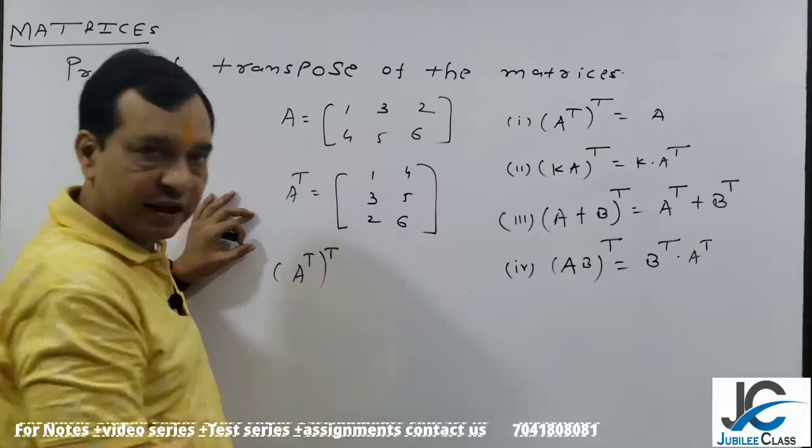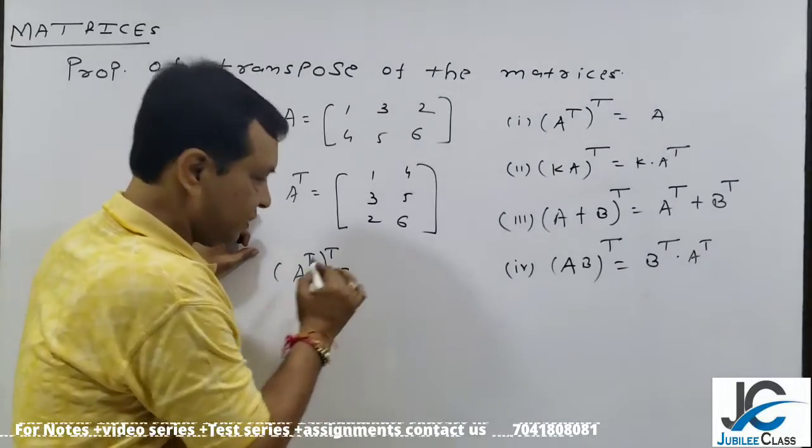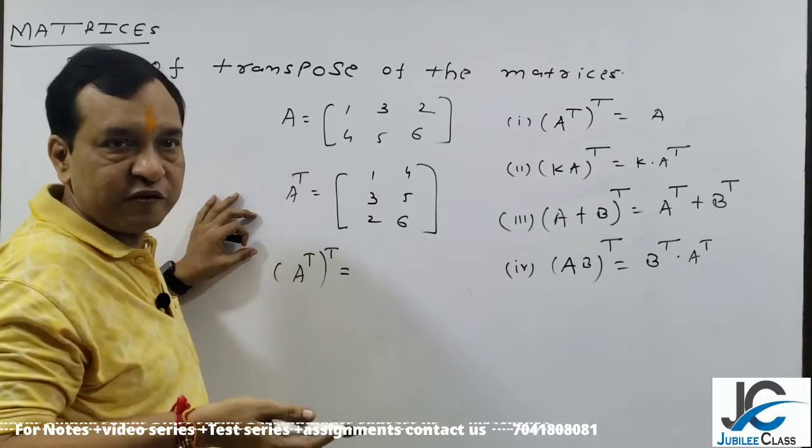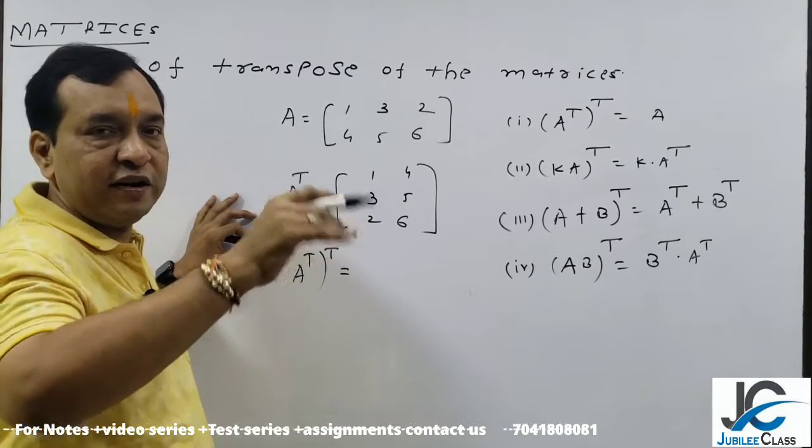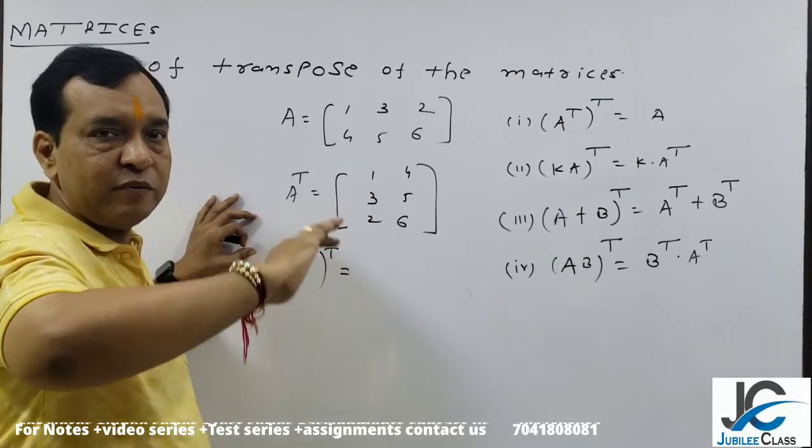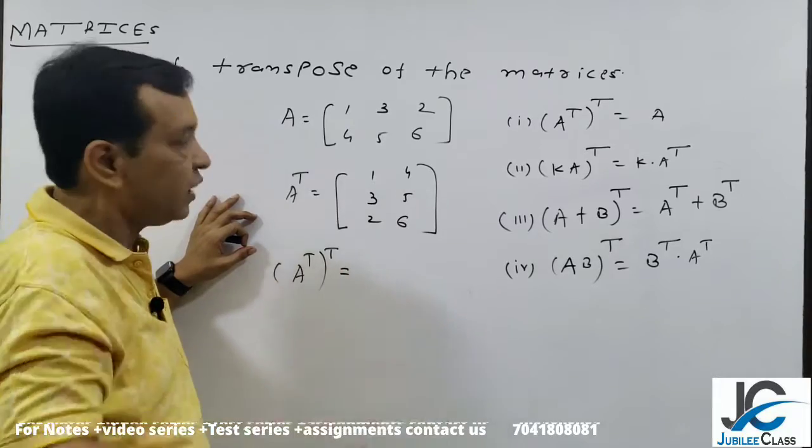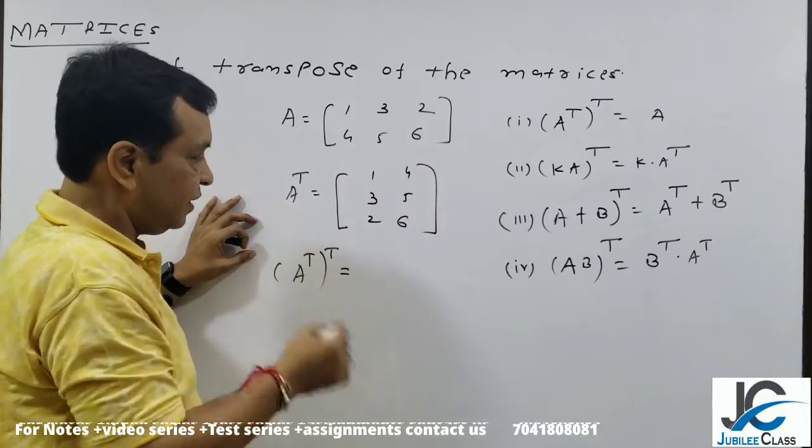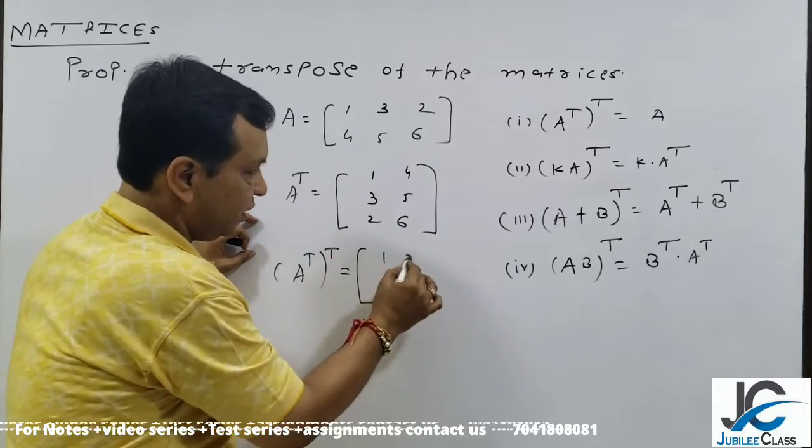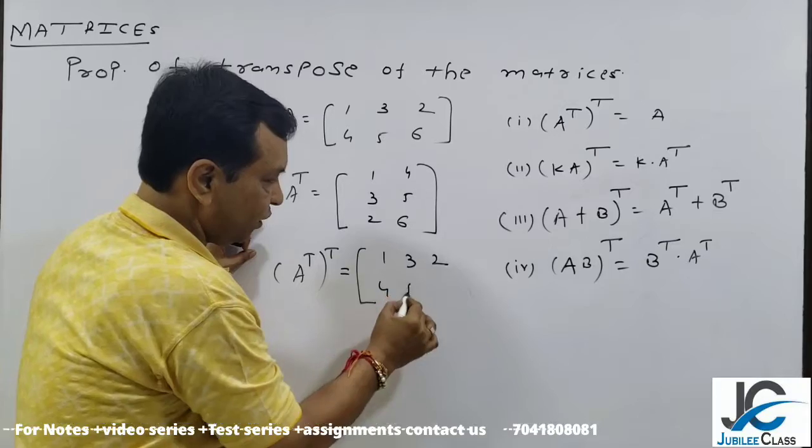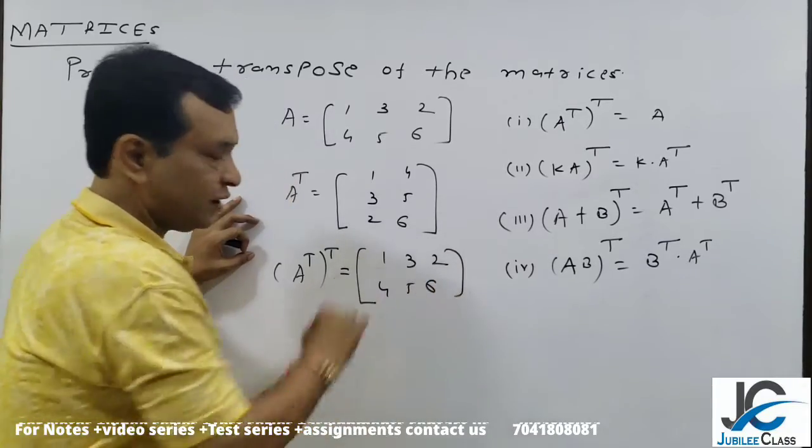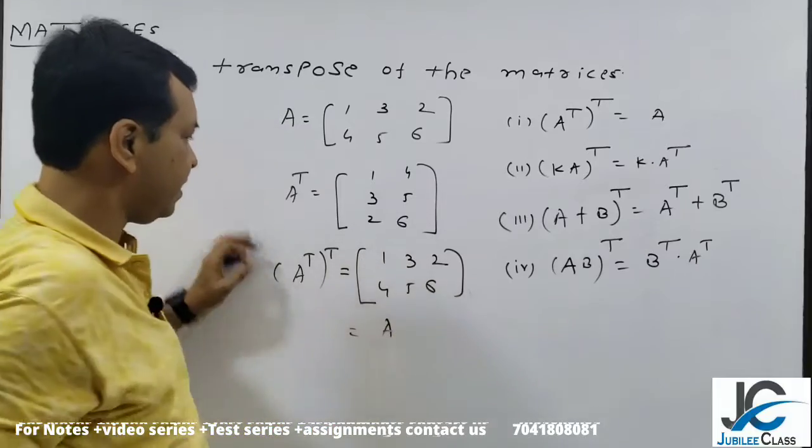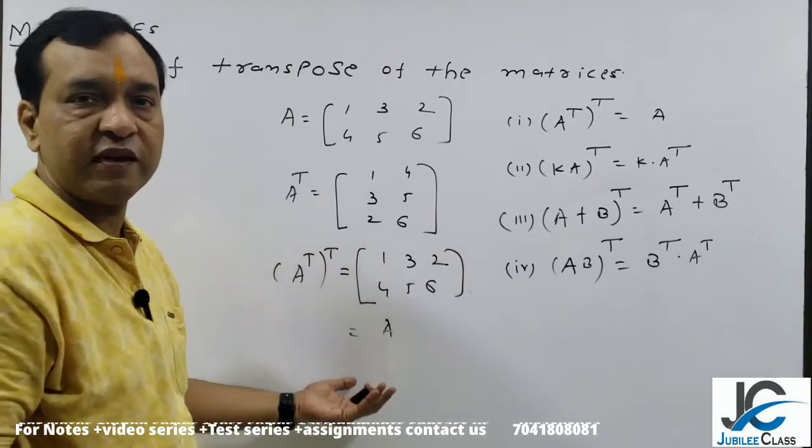So same, row converts to column once again. Then we get [1, 3, 2; 4, 5, 6]. Simple. So what is this? It is A. So A transpose ka transpose gives A.